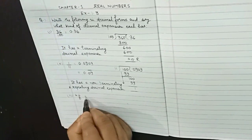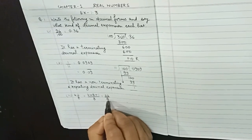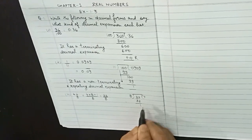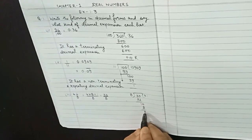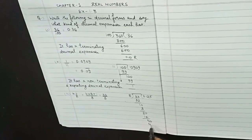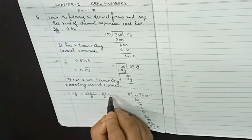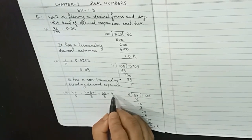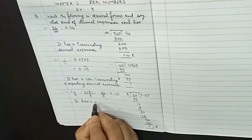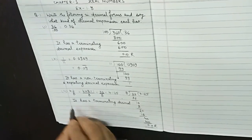The third question is 4 whole 1 upon 8. We convert it into the rational number 33 upon 8. Dividing 33 by 8: eight fours are 32, remainder 1; putting decimal, eight ones are 8, remainder 2; eight twos are 16, then eight fives are 40, remainder zero. The decimal expansion of 33/8 or 4⅛ is 4.125, which has a terminating decimal expansion.